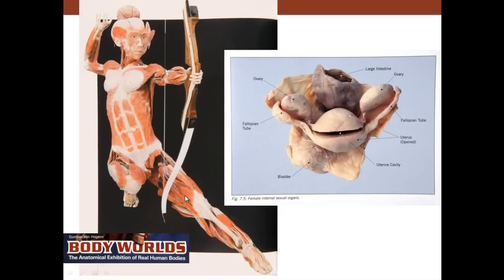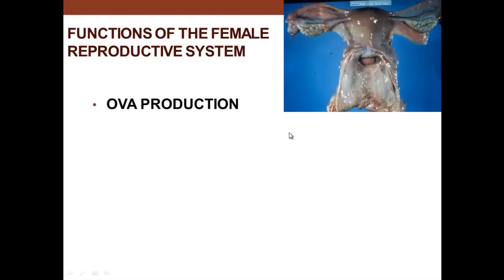Here we see the female reproductive tract. You can see the breast associated with milk production, and inside we can see the uterus. This is the fallopian tube or uterine tubes, and these are the ovaries. Now the female reproductive tract has several functions.